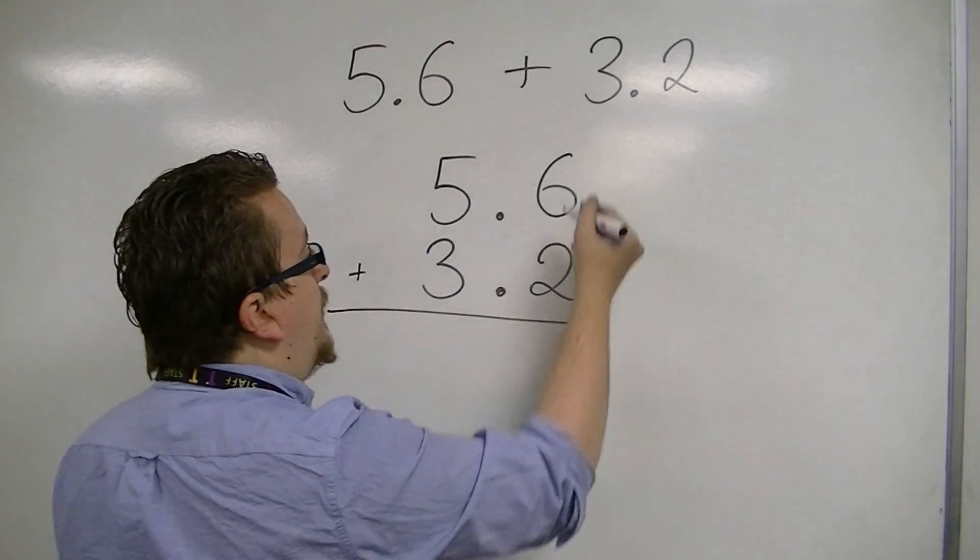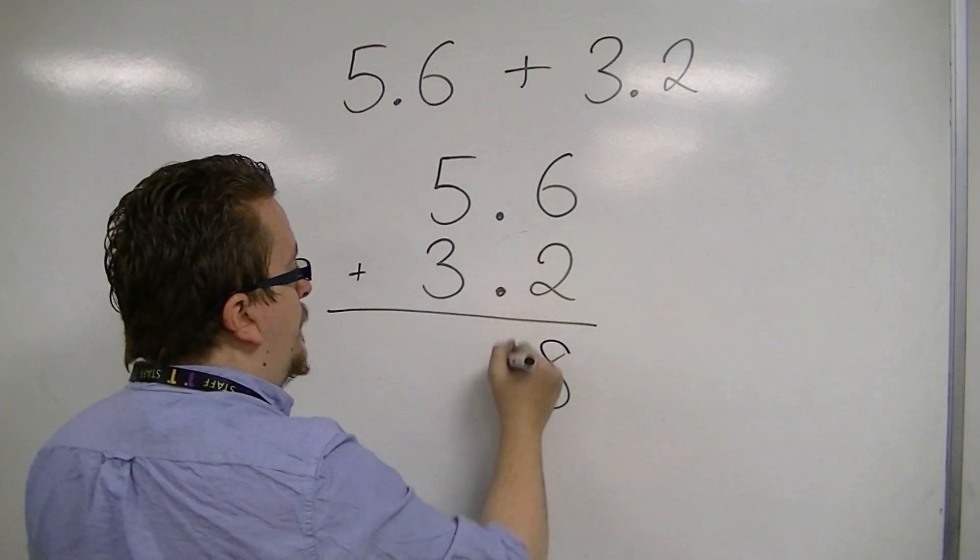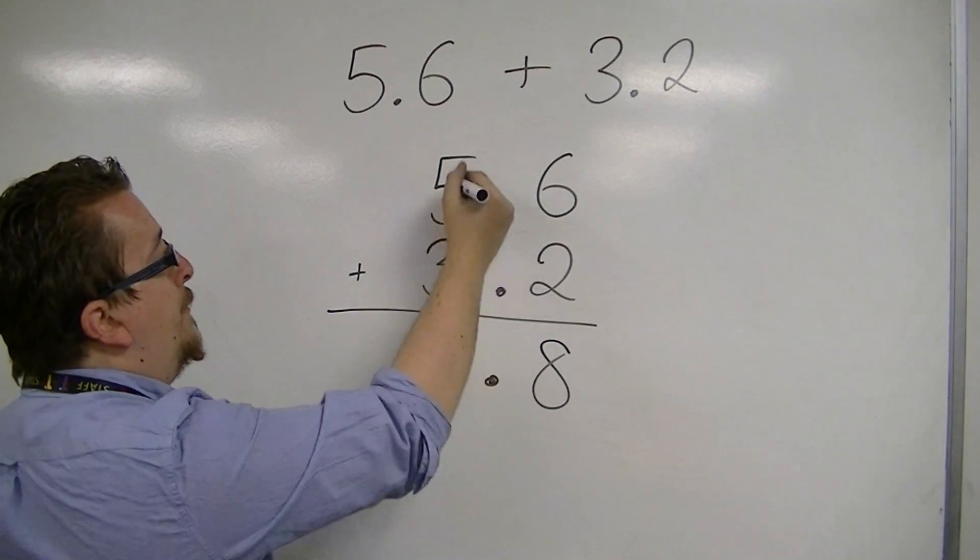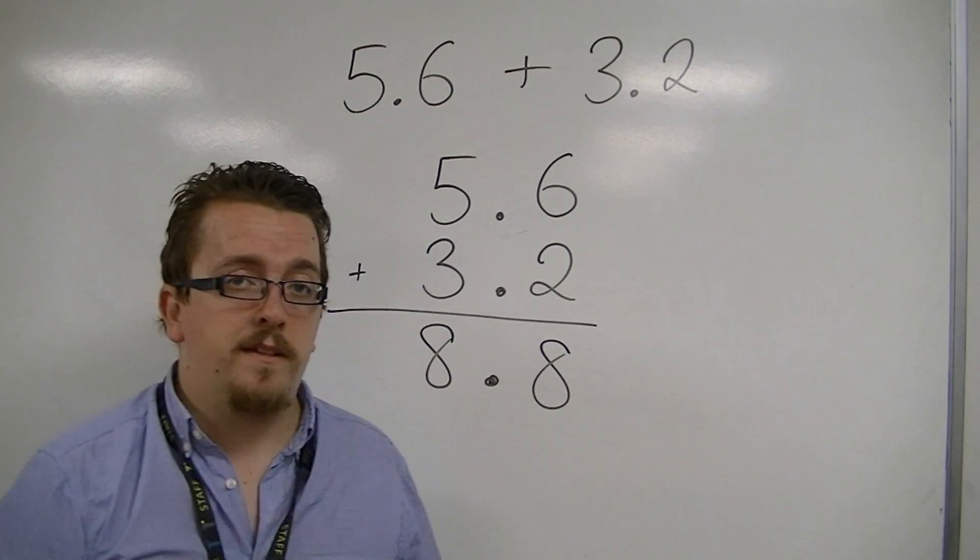So you have 6 plus 2 is 8. Follow the decimal point down. 5 plus 3 is 8. So we just have 8.8.